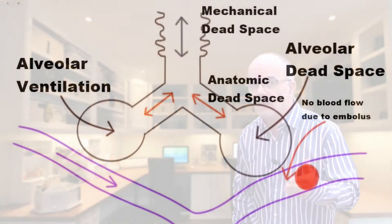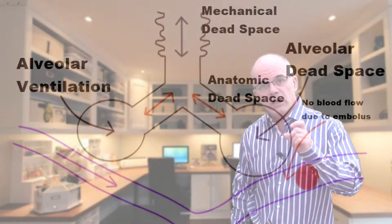Alveolar ventilation takes part in gas exchange but dead space ventilation does not. Dead space is ventilation without perfusion. There is an anatomic dead space in the lungs of approximately 150 mils. Mechanical dead space refers to the rebreathed volume of the ventilator circuit and acts as an extension of the anatomic dead space. The anatomic dead space is a fixed volume, so low tidal volume increases the dead space fraction and decreases alveolar ventilation.